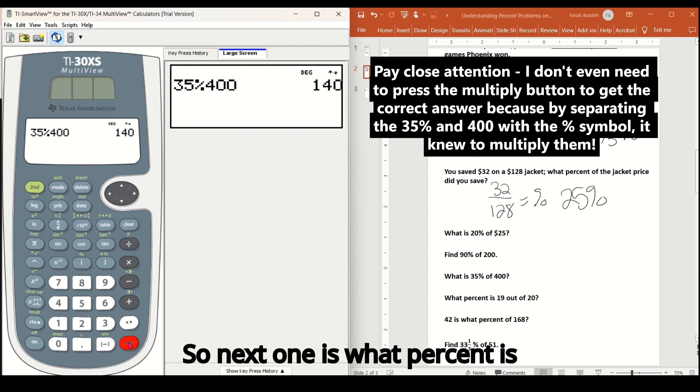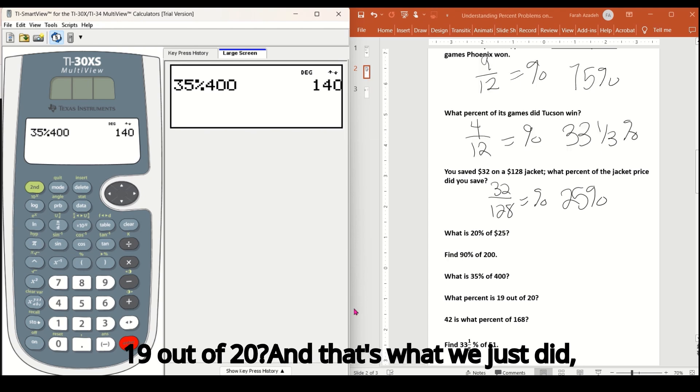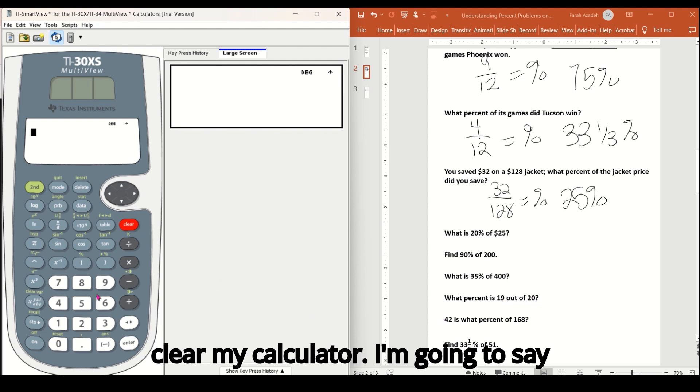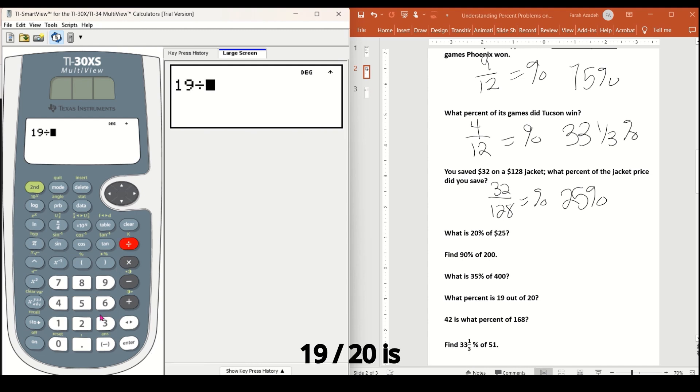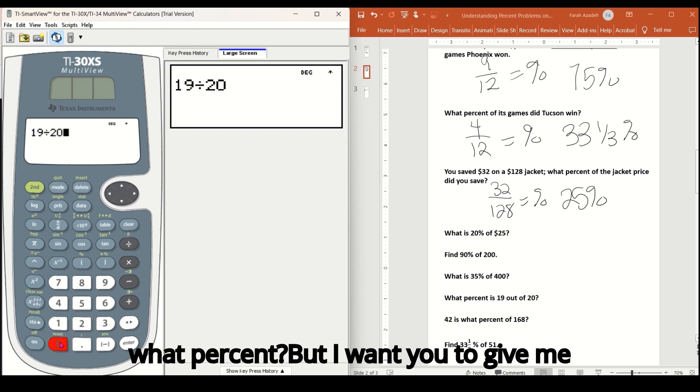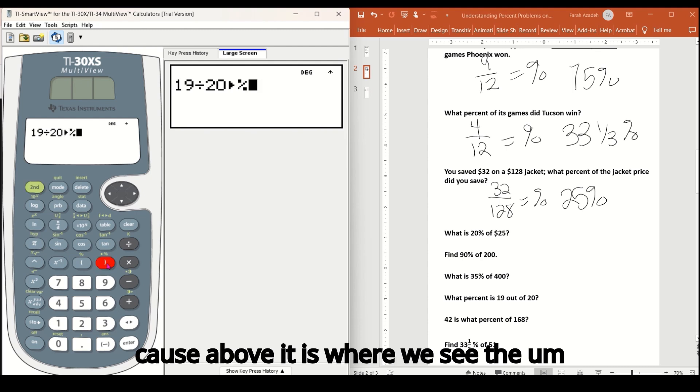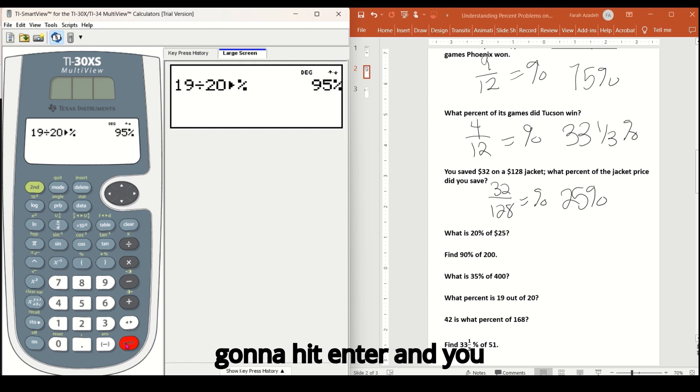So next one is what percent is 19 out of 20. And that's what we just did, right? We have the part 19, the whole or the basis 20. So I'm going to clear my calculator. I'm going to say 19 divided by 20 is what percent, but I want you to give me the answer as a percent. So second key, close parentheses key, because above it is where we see the triangle pointing at the percent. And I'm going to hit enter and you get 95%.